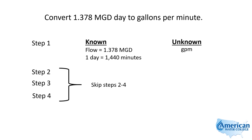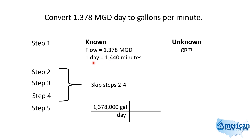We're going to skip right to step 5 and we start with our 1.378 MGD, but notice how I wrote it. I wrote it out long form: 1,378,000 gallons per day. This is what we need to do if we want to use this equivalent of 1440 minutes in one day. We need to make sure that we expand this MGD out to 1,378,000 gallons per day, and then we can enter our equivalent of one day is equivalent to 1440 minutes. That allows our days to divide out and we're left with gallons on top and minutes on the bottom, or gallons per minute.